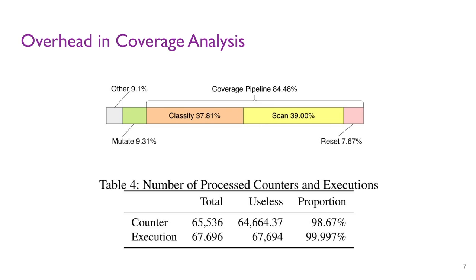As the first row of the table shows, 98% of the processed counters were zero, thus could not provide any help in discovering new inputs. The sparsity of coverage array implies that skipping zero counters quickly during coverage analysis can be a major performance boost.